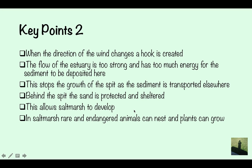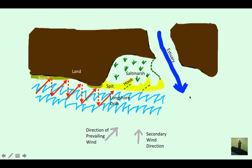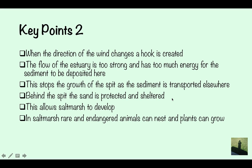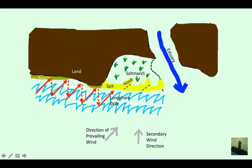The flow of the estuary is too strong and has too much energy for the sediment to be deposited there. The estuary is too strong — it has too much energy for the sand and sediment to get deposited here. This stops the growth of the spit, as the sediment has been transported elsewhere. Even if it does try to deposit sediment here, the estuary is just going to carry it out to sea.